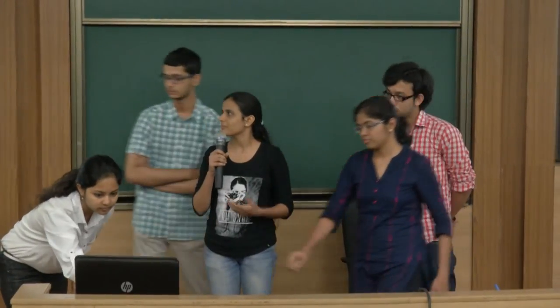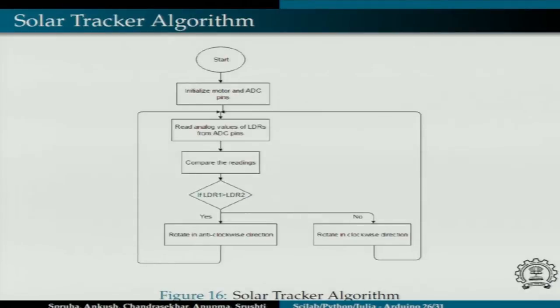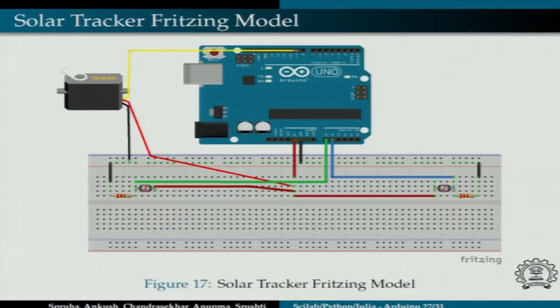I have also implemented an application of Scilab, Arduino, Julia, and Python interfacing — a solar tracker. A solar tracker is a device that tracks the sun so as to increase the output of the solar panel and improve its working. I have used two LDRs to sense the intensity of light, and depending on that I rotate the servo motor in clockwise or anti-clockwise direction.